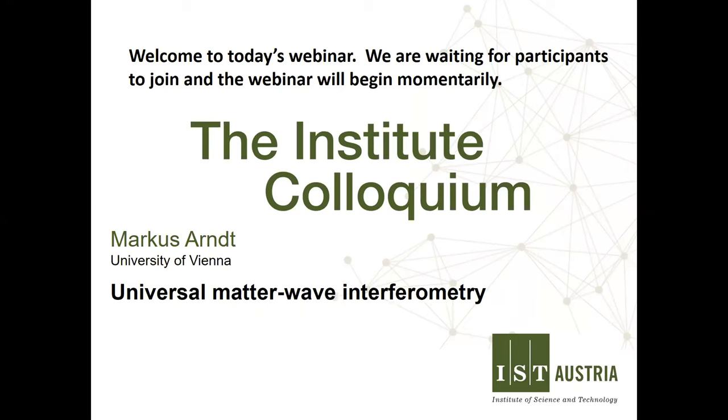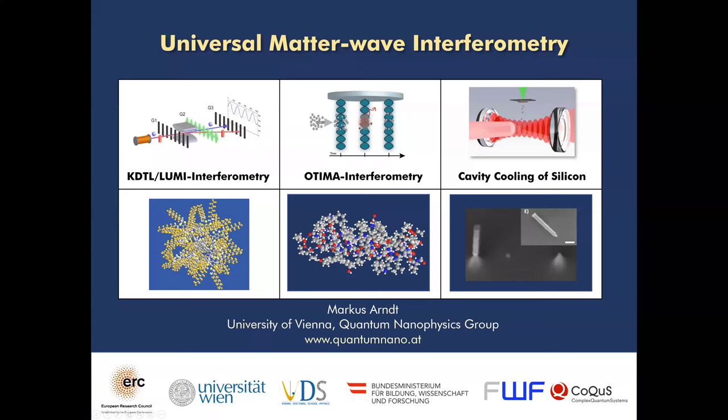So today we have Markus Arndt joining us from University of Vienna. Let me quickly do a formal introduction and then perhaps say a few less formal things. Markus Arndt started his PhD in 1991 and completed in 1994 at LMU Munich at MPQ Garching. His PhD was with Weiss and Hänsch. After a brief postdoc stay following that, he started a postdoc at ENS with Jean Dalibard. Then another postdoc at University of Innsbruck with Anton Zeilinger followed. And then he started climbing the ladder to a full professorship.